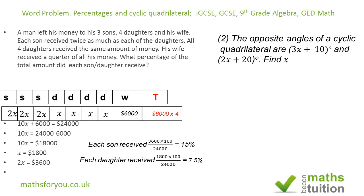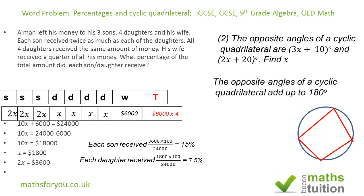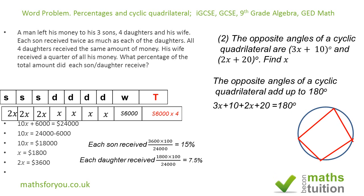For the second question, we have two opposite angles of a cyclic quadrilateral: 3x + 10 degrees and 2x + 20 degrees. The opposite angles of any cyclic quadrilateral add up to 180 degrees. So for our equation, 3x + 10 plus 2x + 20 should give us 180 degrees.